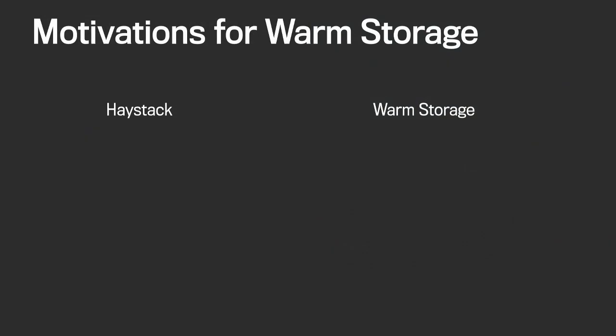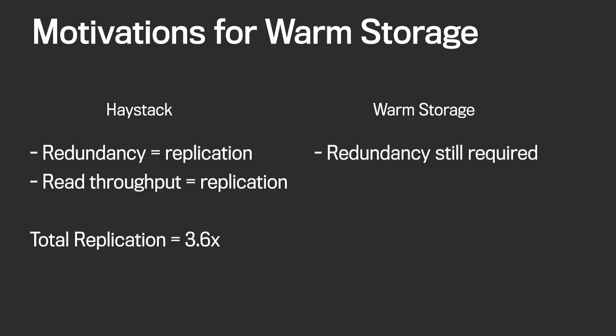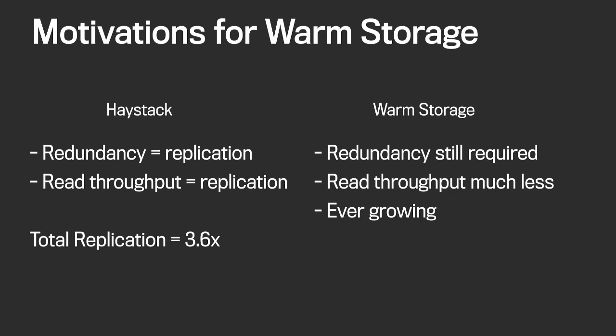So let's talk about how this differs from what we would choose for a warm storage system. In Haystack, our hot storage solution, we need redundancy and we achieve it with replication. We also need high read throughput, which we also achieve with replication, resulting in a total stretch factor of 3.6x per byte. For a warm storage system, we certainly still need redundancy — users expect to see this data for a long time. But our read throughput requirement is much less, and we have a third requirement: this data set is ever-growing, since the preceding decade is warm data.